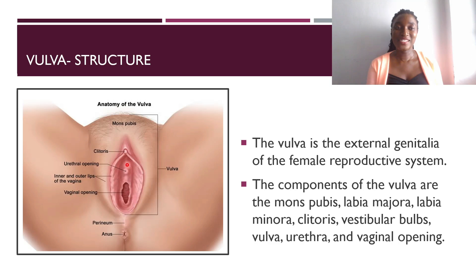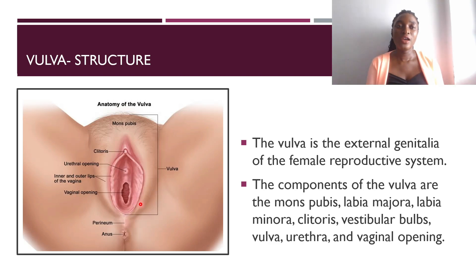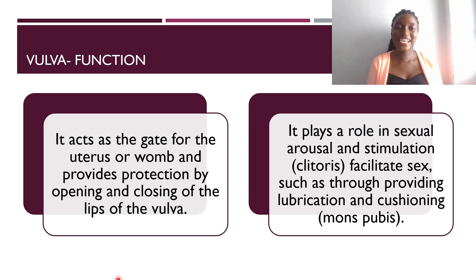From the outer portion of the female reproductive system, we have the vulva. The vulva is a collection of various structures. We have the clitoris, which is usually stimulated to cause sexual arousal in the female during sexual intercourse. We also have two lips: the bigger outer lip, which is the labia majora, and the inner lips, which is the labia minora. These two lips are responsible for covering and protecting the internal structures. We also have the vaginal opening. The function of the vulva is that it acts as the gate for the uterus and provides protection by the opening and closing of the lips.